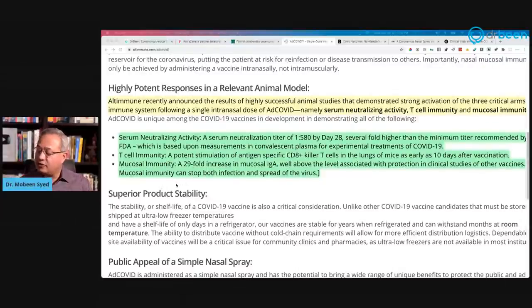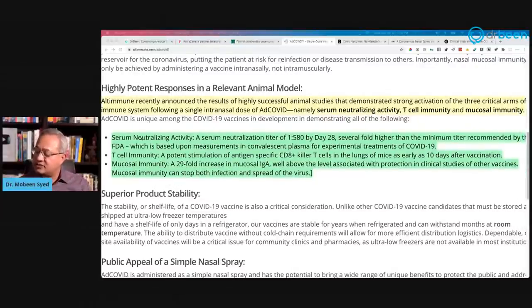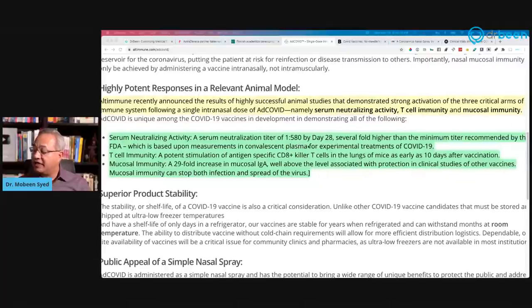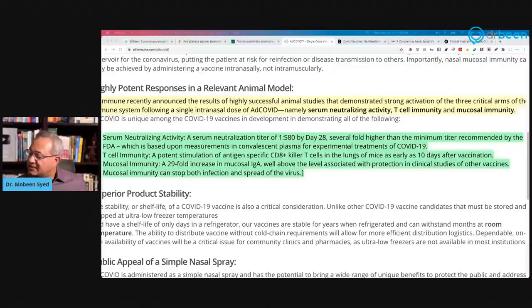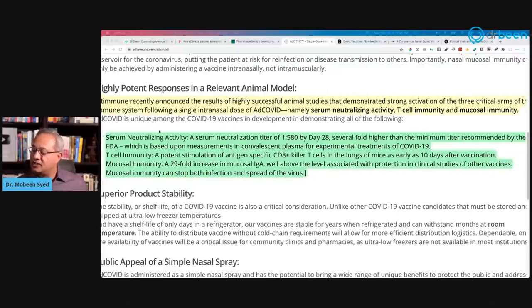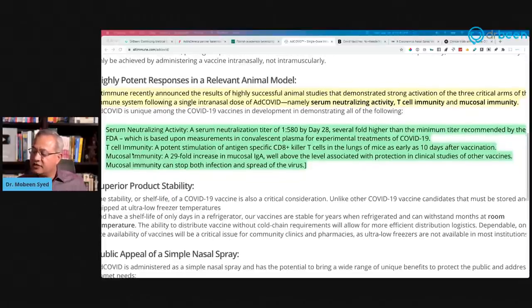Now check this out. In the animal studies, here is what they found. Check this out, serum neutralizing activity, that means IgG against the spike protein. A serum neutralization titer of 1 to 580 by day 28. So remember yesterday when we were talking about oral vaccines, we said that some folks were disappointed that the neutralizing titers were not produced. Here in the animal studies, they are already seeing that by day 28, IgGs were produced.